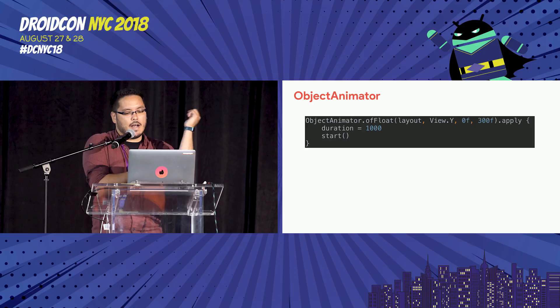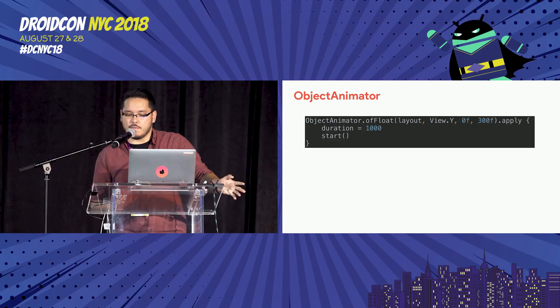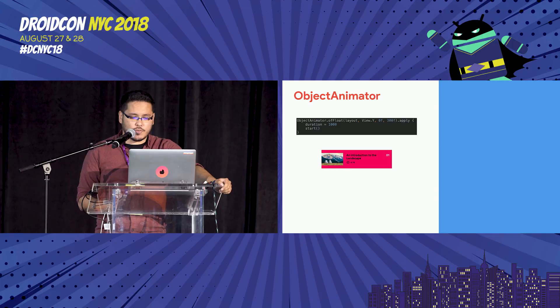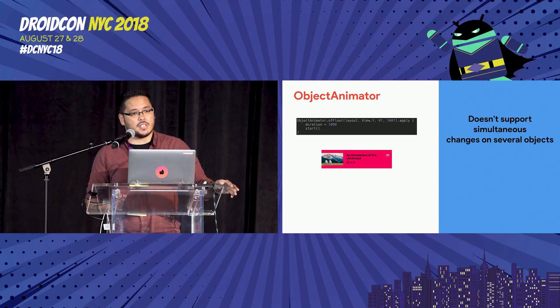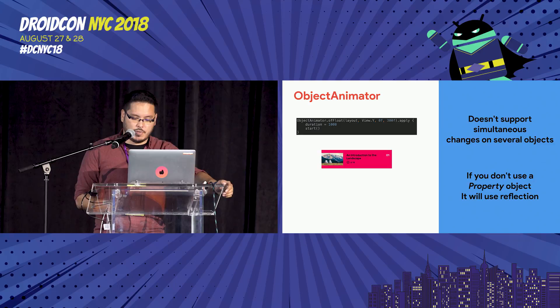One option is the ObjectAnimator. You can just animate a property — in this case, I want to animate from top to bottom, set the duration, set the start, and that's it. It's pretty straightforward. Some drawbacks: it doesn't support simultaneous changes on several objects, so doing different animations on different views at the same time gets very complicated. And if you don't use a property object like view.y, it will use reflection, which is not very performant for your application.